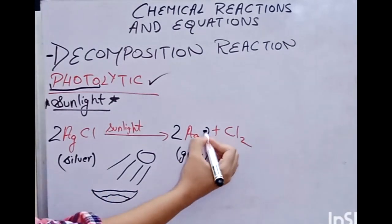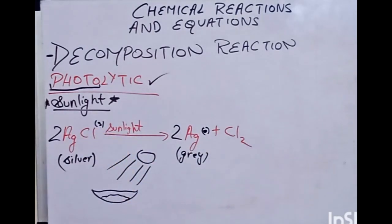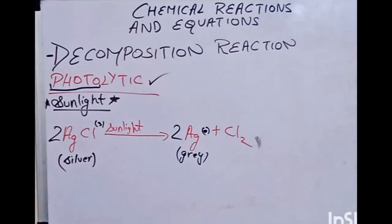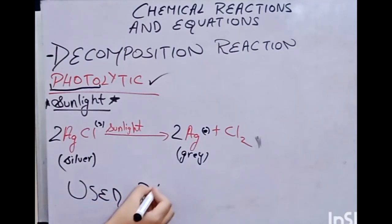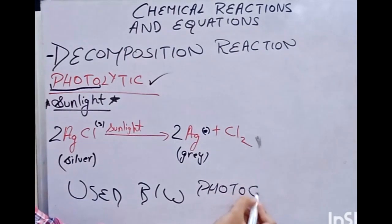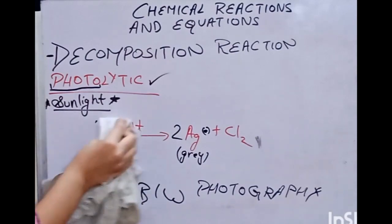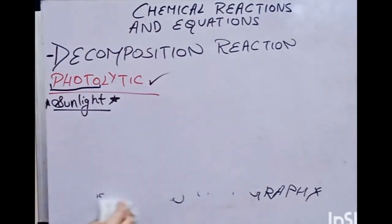So AgCl breaks down into solid Ag and Cl2 gas. One important thing to remember is that AgCl — silver chloride — was used for black and white photography. This is a useful application to remember.